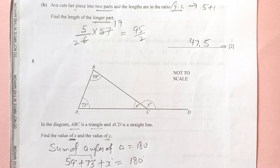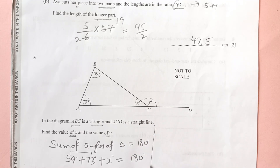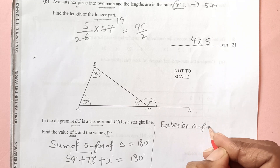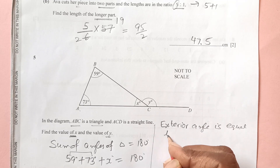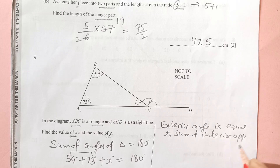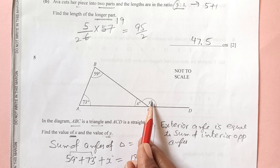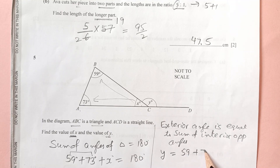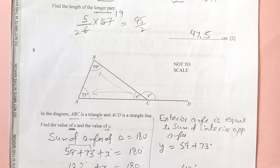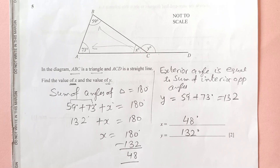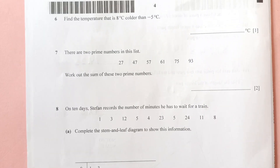Now find y. Y is the exterior angle of the triangle. The exterior angle equals the sum of the two interior opposite angles: y = 59 + 73 = 132 degrees.